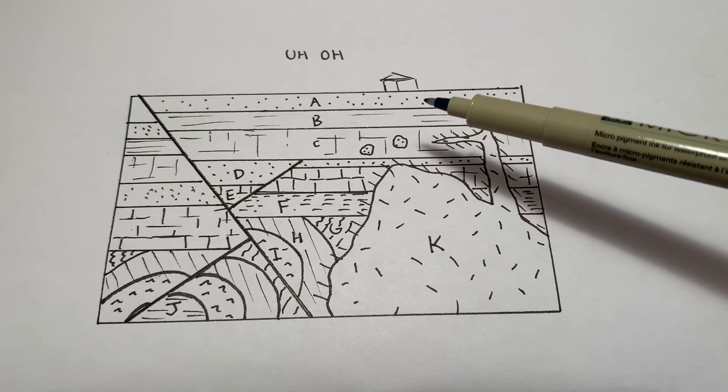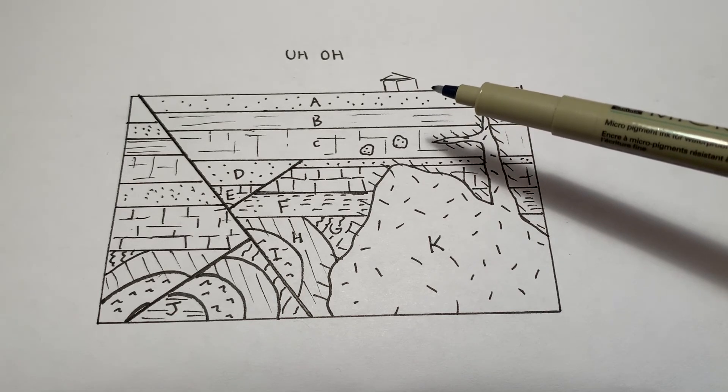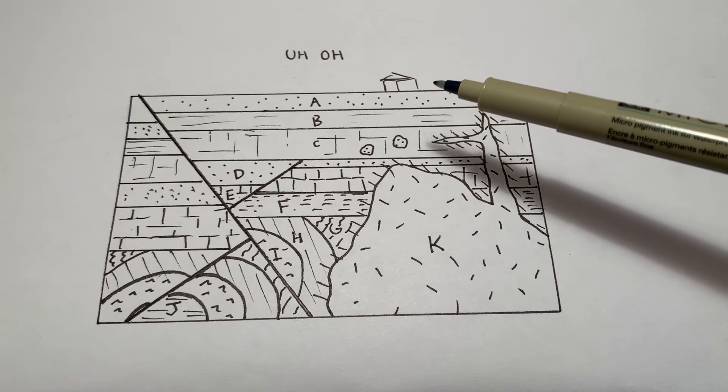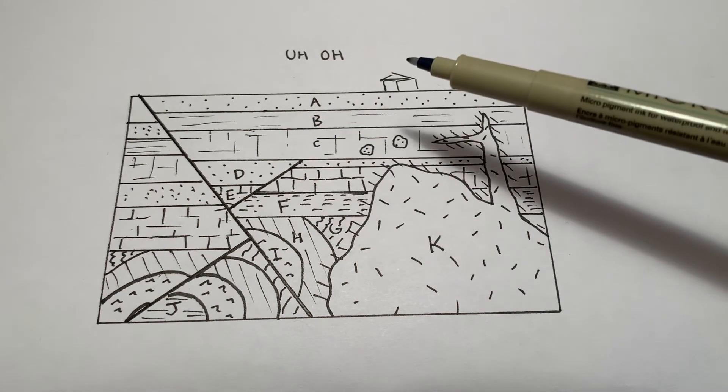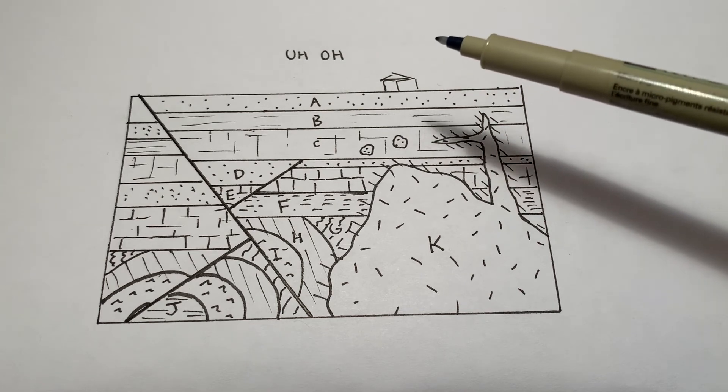And that's where other laws of relative dating, like cross-cutting relationships, inclusions, intrusions, things like those come in handy. There are probably some unconformities in here, too. I just didn't bother drawing them in.